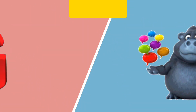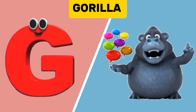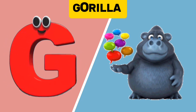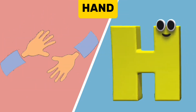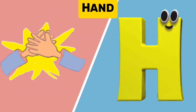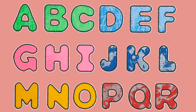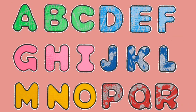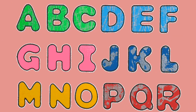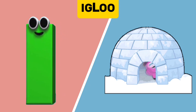G is for Gorilla. G, G. Gorilla. H is for Hand. H, H. It's the letters of the alphabet.